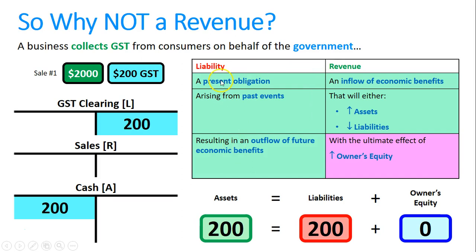In summary, we never want to record GST as revenues or expenses — it's always going to be a liability, or if the business pays more GST than it collects, it could be an asset. We never want to see GST in the income statement alongside revenues and expenses.